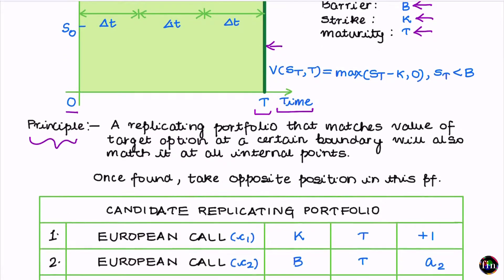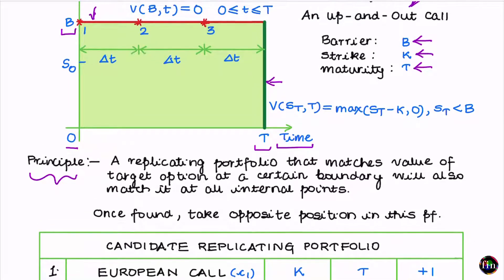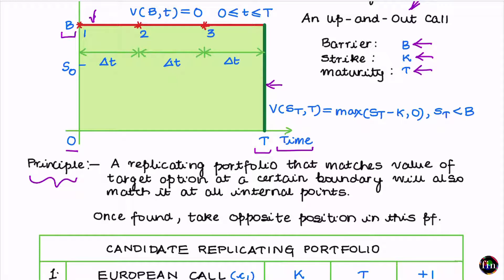Let's begin step one — finding the replicating portfolio. The green boundary corresponds to the expiry of the up-and-out call. If we are located on the green boundary and the barrier has not been touched during the life of the option, then the payoff of this up-and-out call equals the payoff of a vanilla call of the same strike K and maturity T. This payoff is also equal to the value of the up-and-out call at expiry, limited to stock prices below the barrier B.